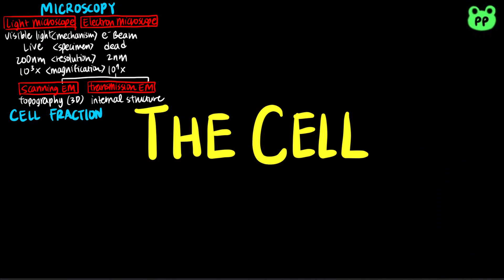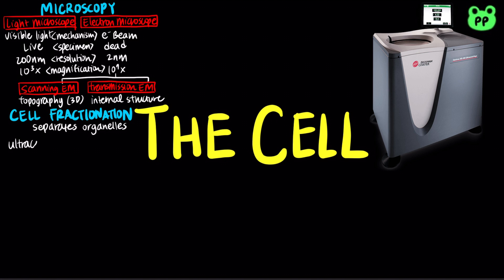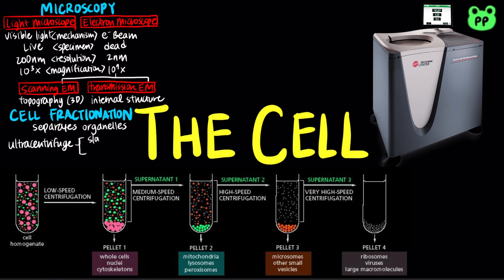Cell fractionation takes cells apart and separates the major organelles from one another. Cell fractionation is carried out by an ultracentrifuge, which spins test tubes containing mixtures of disrupted cells at increasing speeds. At lower speeds, the pellet, which is the component that settles to the bottom of the tube, consists of large components, whereas higher speeds result in a pellet with smaller components.